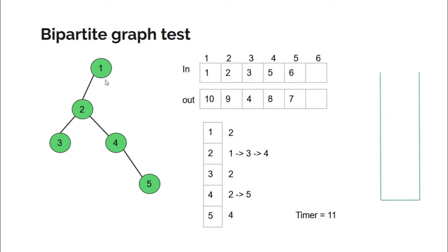If two nodes do not lie in the subtree of one another — like nodes 3 and 4 — then if you enter one subtree first you will completely leave it before entering the other. So the in time and out time of one node will both be entirely higher than the in time and out time of the other node. This way you can determine in constant time whether one node lies in the subtree of another.